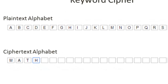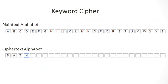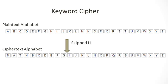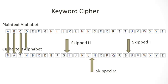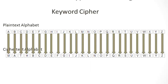Now we need to fill in the rest of the cipher text alphabet using the remaining letters of the alphabet. You'll notice that we skipped H, M, and T because those were already used at the beginning of the cipher text alphabet — we remove them from the remaining part of the alphabet. So: A encrypts to M, B to A, C to T, D to H, and then the rest of the plain text maps to their corresponding cipher text letters.